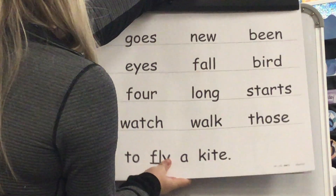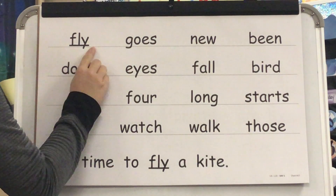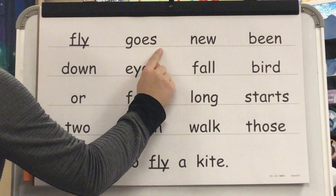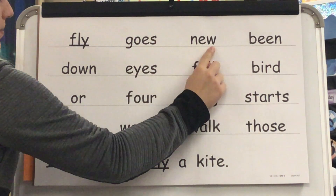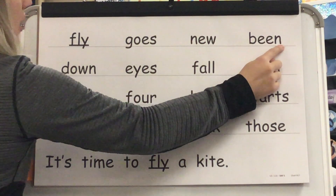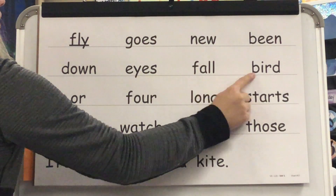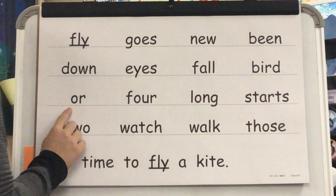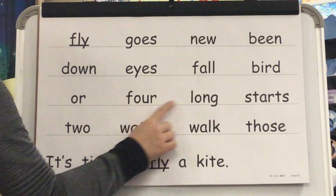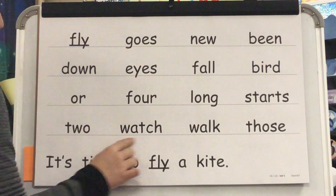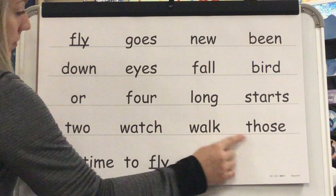Let's read those high frequency words together. This word is fly. What word? Fly. Yes, fly. This word is goes. What word? Goes. Yes, goes. Word? New. Yes, new. Word? Then. Yes, been. Word? Down. Word? Eyes. Word? Fall. Word? Or? Word? For? Word? Long? Word? Starts? Word? To? Word? Watch? Word? Walk? Word? Those?